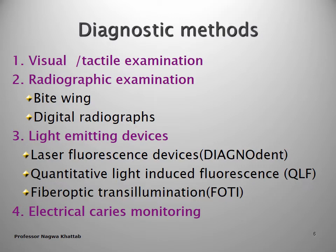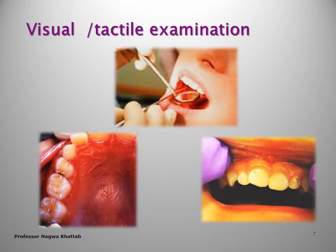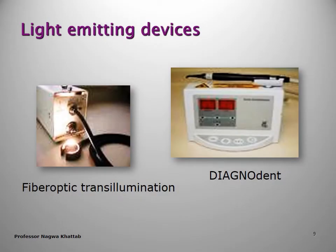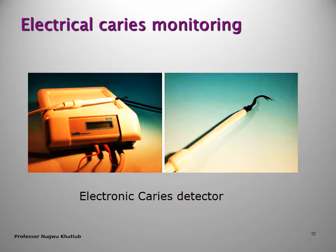Other diagnostic tools include quantifying laser-induced fluorescence, fiber optic transillumination, and electronic caries monitoring. The visual and tactile examination uses a mirror and probe. Using a bitewing radiograph, here we can see early caries lesions in the proximal surfaces of the lower teeth, appearing as an inverted triangle with the base at the surface. Light-emitting devices include the DIAGNOdent, fiber optic transillumination, and electronic caries detectors.